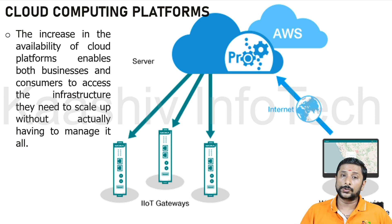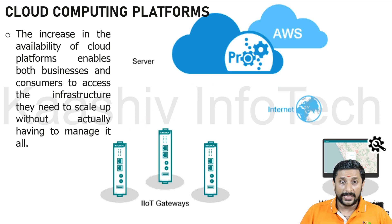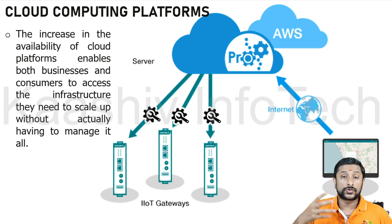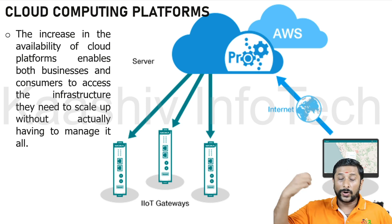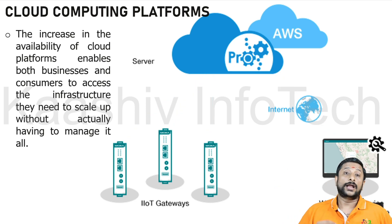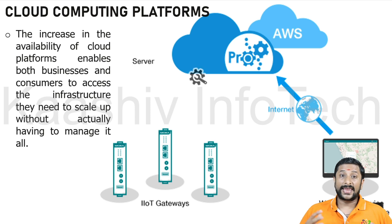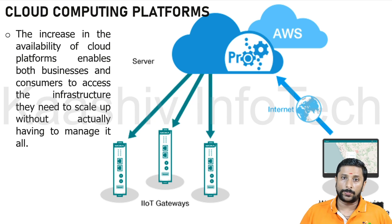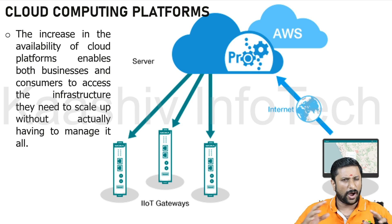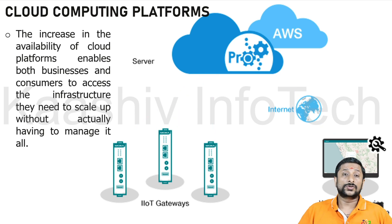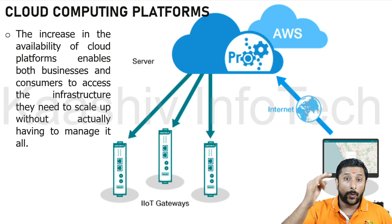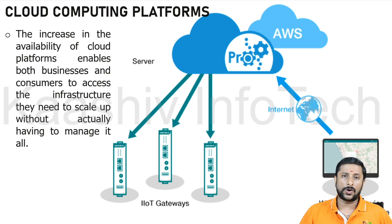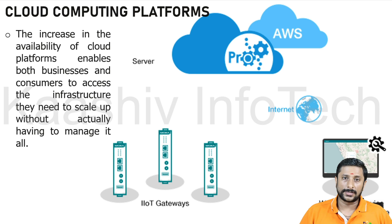Cloud computing is dominating the industry. Instead of storing data in local servers, you can store it remotely by renting the technology — Amazon AWS, Microsoft Azure, or Google Cloud Platform are dominating. They are secure, reliable, availability is good — everything is awesome. That's why cloud computing enables IoT into a better format.